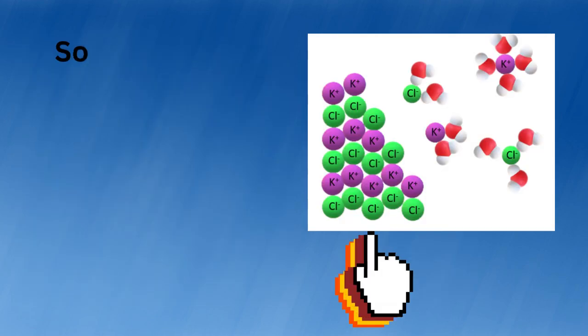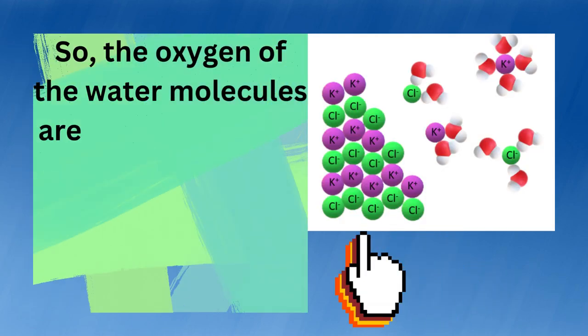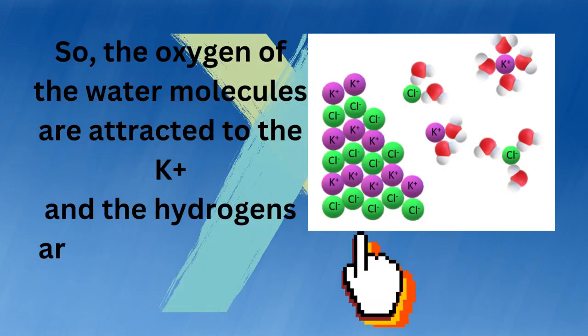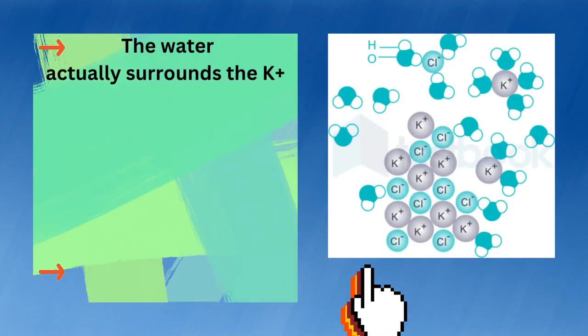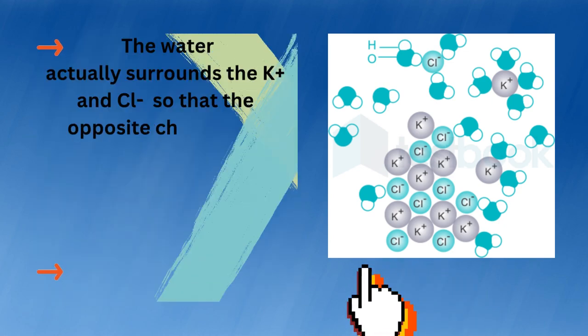The oxygen of the water molecules are attracted to the potassium ion, and the hydrogens are attracted to the chloride ion. The water actually surrounds the K+ and Cl- ions so that the opposite charges are allowed to be close together.